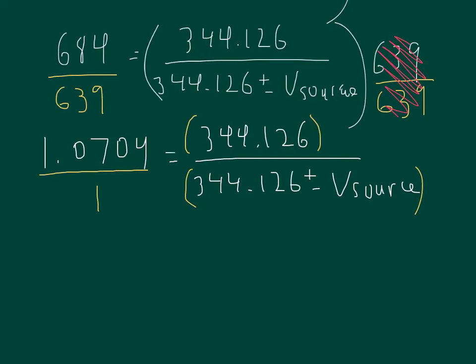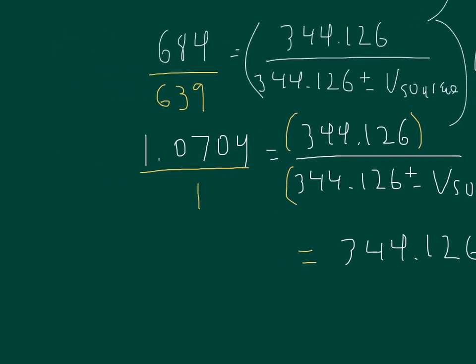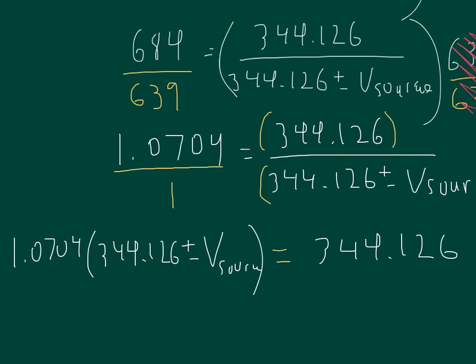The first thing I'm going to do is this cross multiplication right here. So 1 times 344.126, which gives me 344.126. Then we're going to do this multiplication, and I will get 1.0704 times 344.126 plus or minus speed of the source. So here's what we've got.